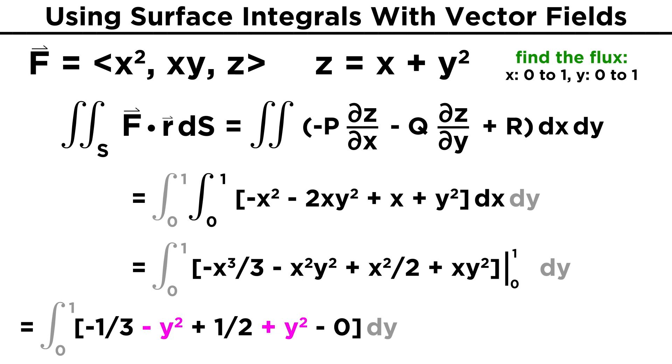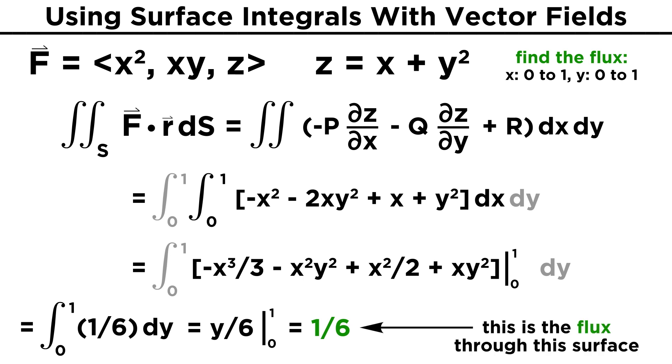The Y squared terms cancel, leaving us with the integral from zero to one of one sixth dY. This gives us Y over six evaluated from zero to one, which is just one sixth. This will be our flux through this surface.